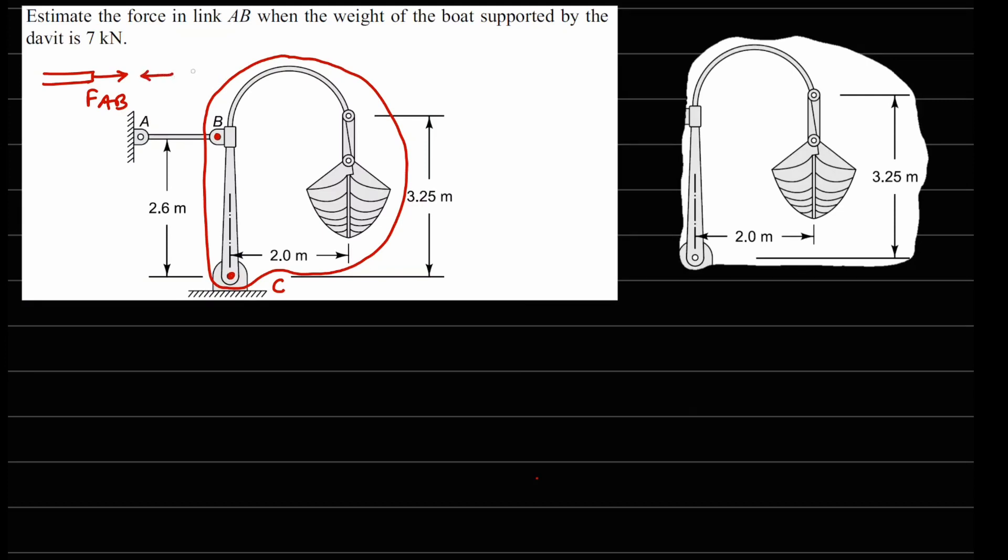So when you start drawing the FBD of this part, which I have done on the right-hand side here, there should be a force coming here which is FAB. And at point C there should be two supports - one RCX and one RCY. Now the weight of the boat is given as 7 kilonewtons, so that should be acting somewhere here.